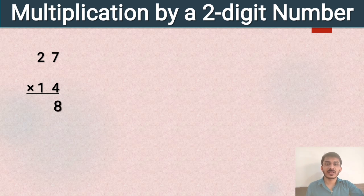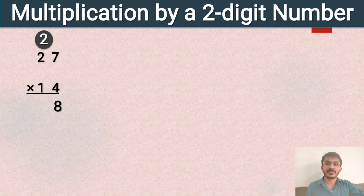So 8 we write at the ones place, and 2 is carried forward. 4 twos are 8, and 8 plus 2 is equal to 10. So 27 multiplied by 4 is equal to 108.